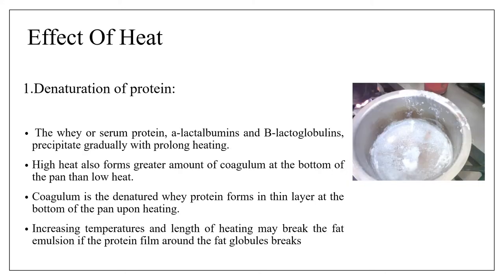Effect of heat: denaturation of protein. The whey or serum proteins — alpha-lactalbumin and beta-lactoglobulin — precipitate gradually with prolonged heating. High heat also forms greater amounts of coagulum at the bottom of the pan than low heat. The higher the heat, the more formation of coagulum will occur. Coagulum is the denatured protein that forms in a thin layer at the bottom of the pan upon heating.